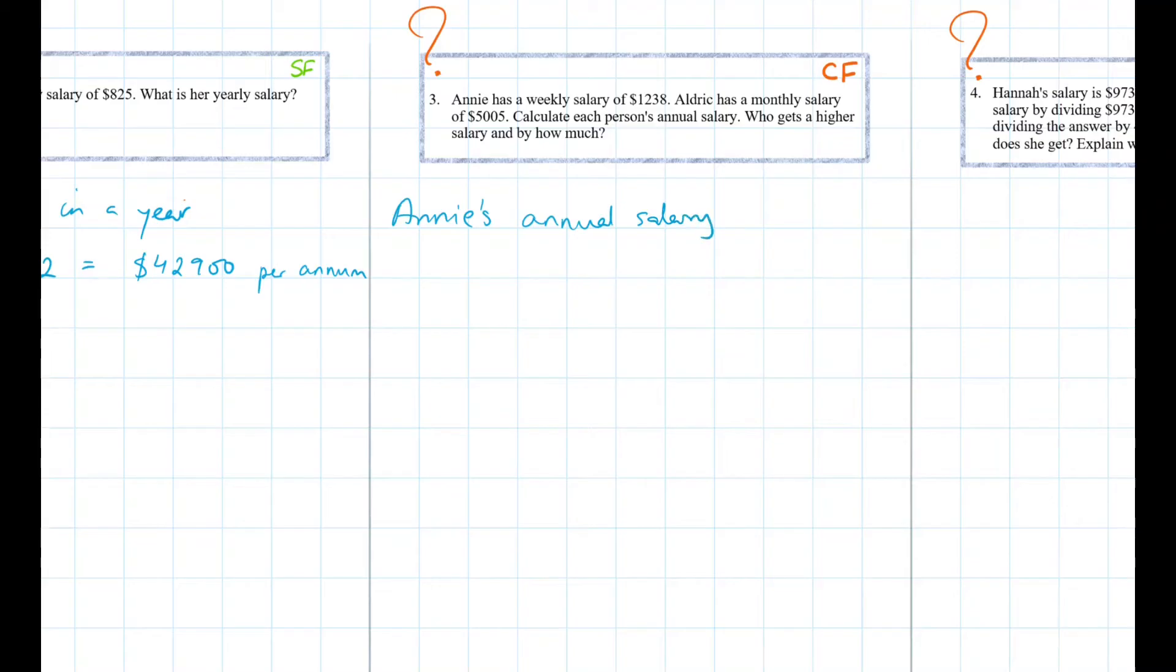So let's begin with Annie. So Annie's annual salary. Remember annual means yearly. So she's getting paid $1,238 weekly. So her annual will be $1,238 times 52, which is $64,376.